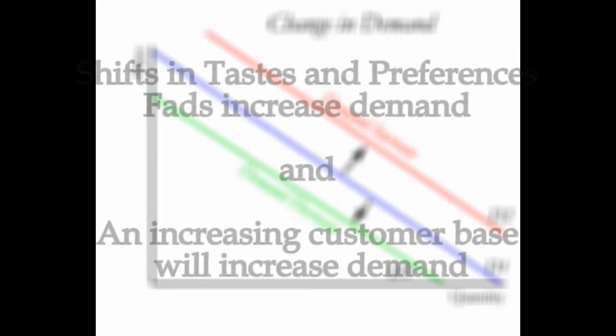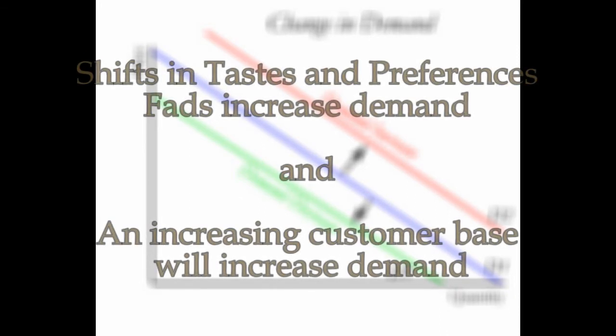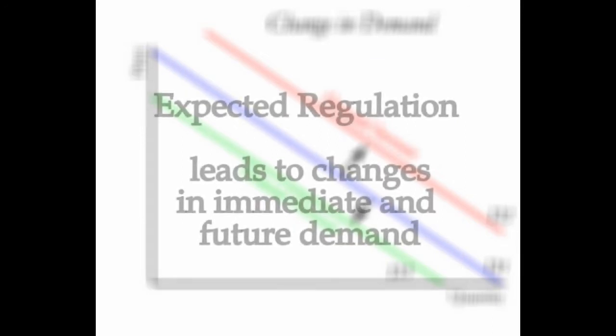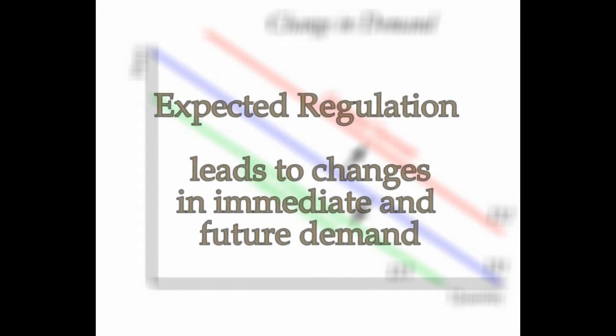Other influences include shifts in tastes and preferences, the number of consumers in a market, and regulation, which often acts opposite the way policymakers expect. For example, when consumers expect regulation to cause an increase in the price of goods in the future, current demand will increase. That is, customers adjust demand based on future price expectations.